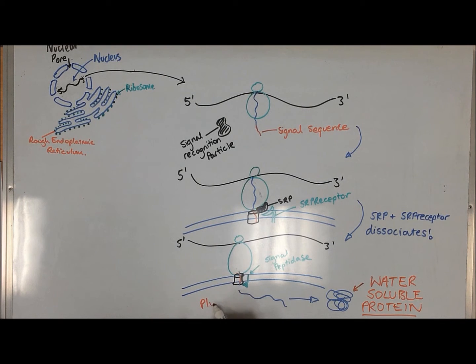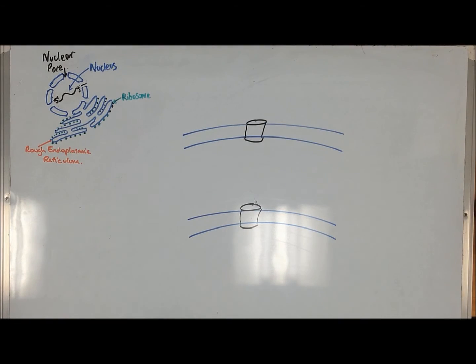Protein folding in the ER lumen is initiated by the addition of an oligosaccharide chain to the polypeptide by glycosyltransferase and is assisted by a folding chaperone called calnexin. Calnexin binds after the cleaving of two glucose molecules from the oligosaccharide and once protein folding is completed, calnexin along with the remains of the oligosaccharide chain are cleaved from the folded protein.